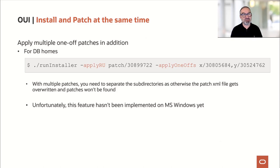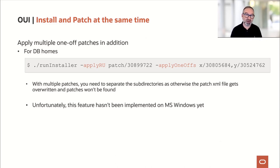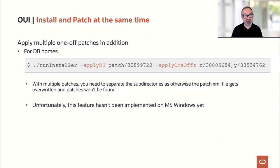In addition, you can also install one-offs if you want to. Here I'm using -applyRU for an RU — a slightly older one — plus some one-offs. You may wonder about the paths like patch/X and patch/Y — I just shortened them to fit on the slide. When you apply more than one patch or one-off in addition, it's important to keep the subdirectory trees completely separate. Otherwise, if you unzip all patches under one single directory, the patch.xml file will be overwritten by each subsequent patch and the installer won't find them. The rule is: keep each RU and one-off in totally separate directory trees, and the installation will find them.